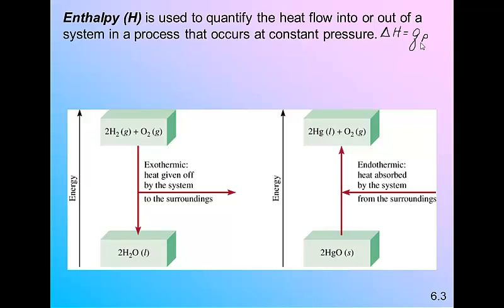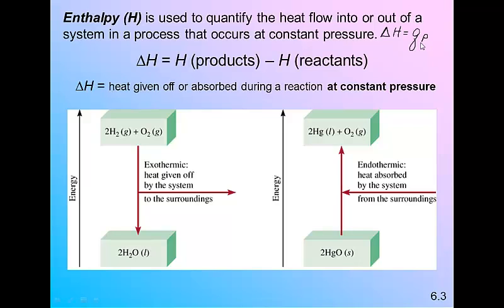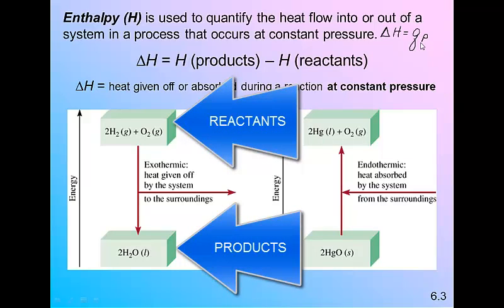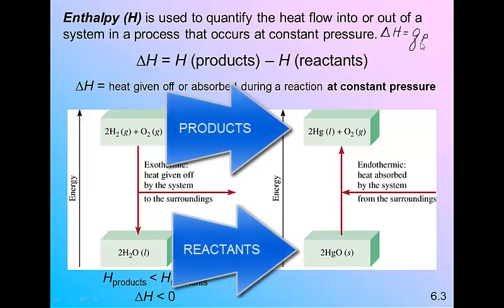Enthalpy is used to quantify the heat flow into or out of a system in a process that occurs at constant pressure. H is the symbol for enthalpy. We cannot directly measure the enthalpy of a process, so we measure the change in enthalpy. The change in enthalpy is the enthalpy of the products minus the enthalpy of the reactants — the heat given off or absorbed during a reaction at constant pressure. In the picture on the left, the energy of the products is less than the reactants, giving a negative value, meaning it is exothermic. In the picture on the right, the energy of the products is greater than the reactants, giving a positive value, meaning it is endothermic. The sign tells you direction.